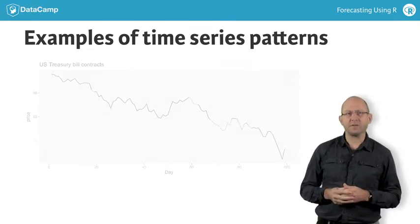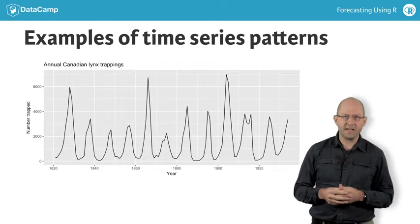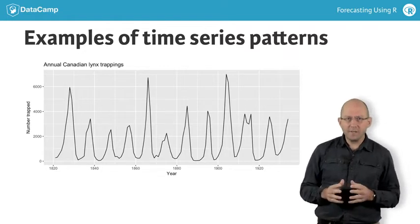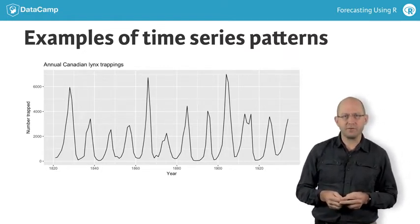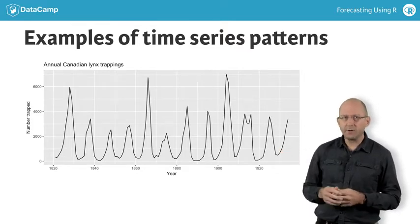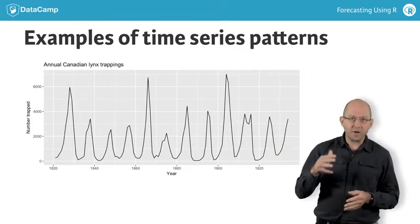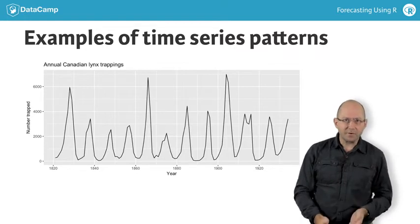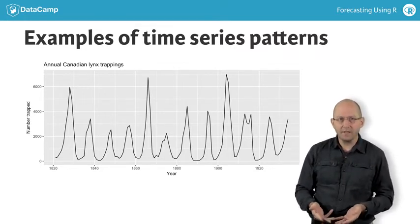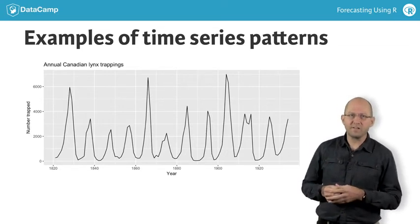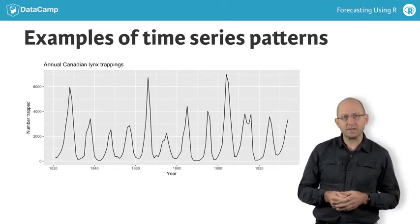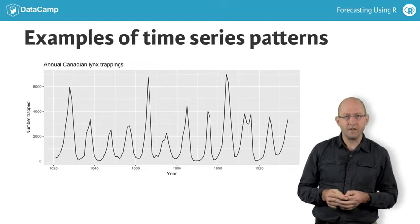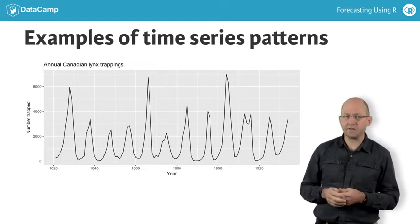My last example is a famous time series: the number of lynx trapped annually in the Hudson Bay region of Canada from 1821 to 1934. Lynx are medium-sized wild cats that used to be trapped for their fur. Because this is annual data, it cannot be seasonal. The population of lynx rises when there is plenty of food, and when the food supply gets low, they stop breeding, causing the population to plummet. The surviving lynx then have plenty of food, start to breed again, and the cycle continues. The length of these cycles varies from between 8 and 11 years. This is also a good example to show how variable the magnitude of cyclic patterns can be, with the largest peak being more than three times the size of the smallest peak.